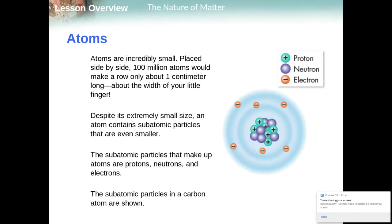Atoms are really, really, really small. To give you an idea, 100 million atoms of carbon laid side by side would make a row only about one centimeter long. Despite their extremely small size, they actually contain subatomic particles that are even smaller than that.